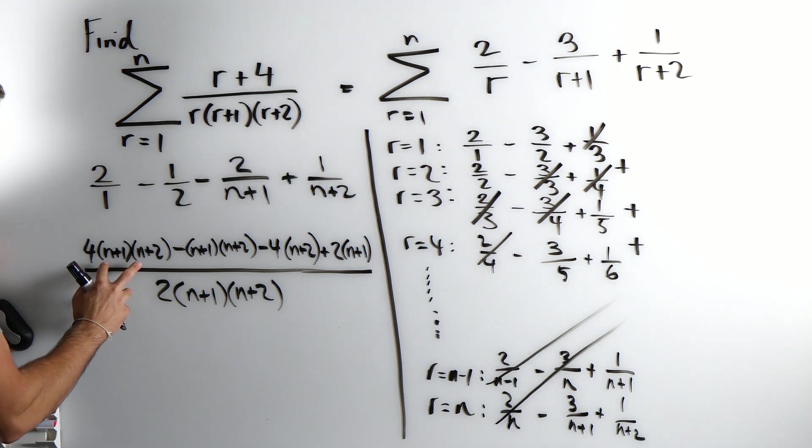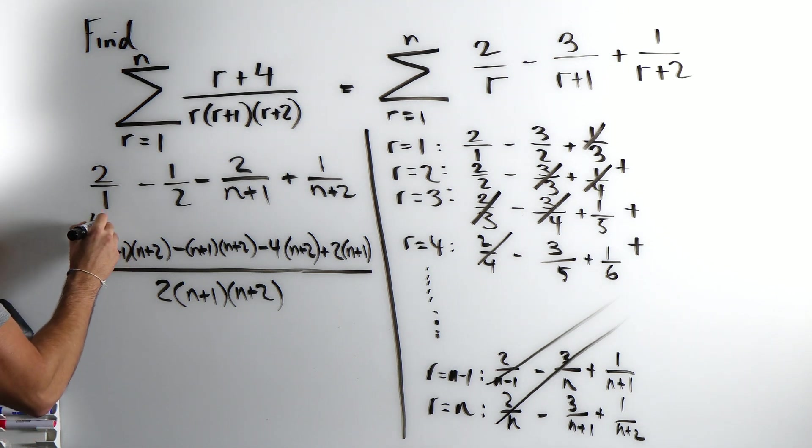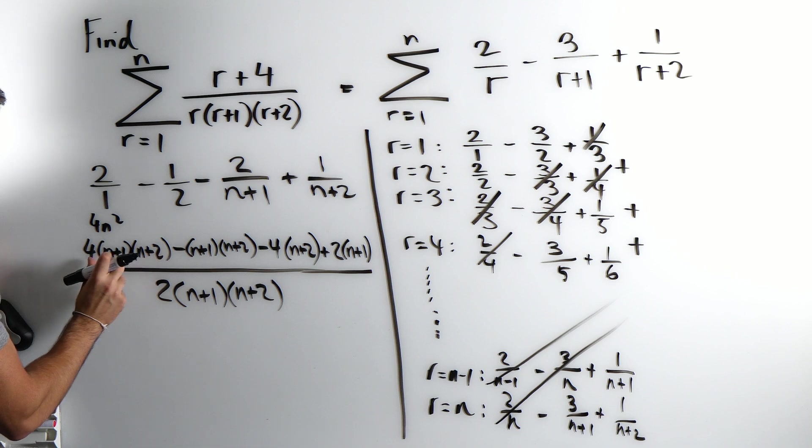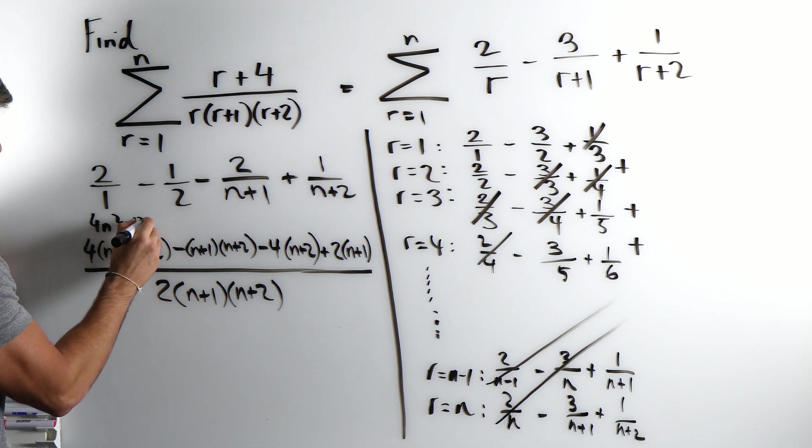Now rather than writing a whole new line, just expand it here. n times n is n squared times 4, 4n squared. 2n plus n is 3n. 3n times 4 is 12n. 2 times 4, 8.